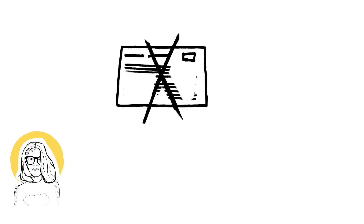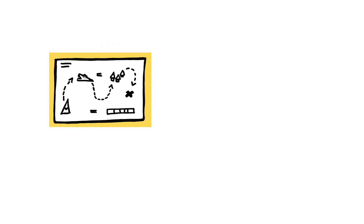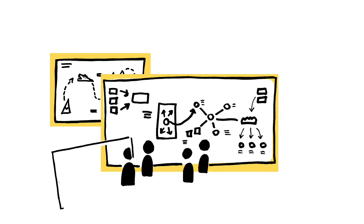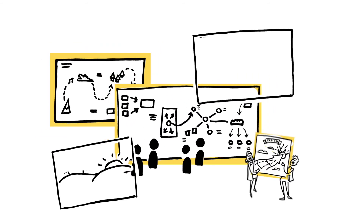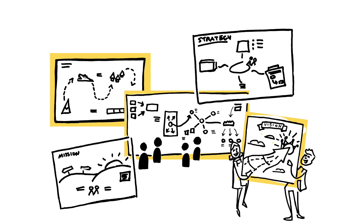So at this point, you might want to switch from a page full of text that might confuse your listener to a page full of drawings. Here are some good examples of how visual thinking is used to express different ideas and concepts.